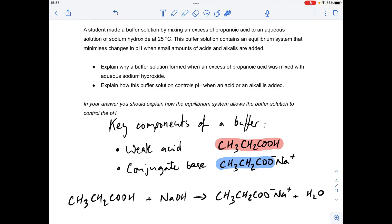We'll start by reminding ourselves what the key components of a buffer are. It's a weak acid, so in the case of this question, that's propanoic acid and conjugate base. In the case of this question, it's sodium propanoate because we're using sodium hydroxide in this reaction with the propanoic acid.